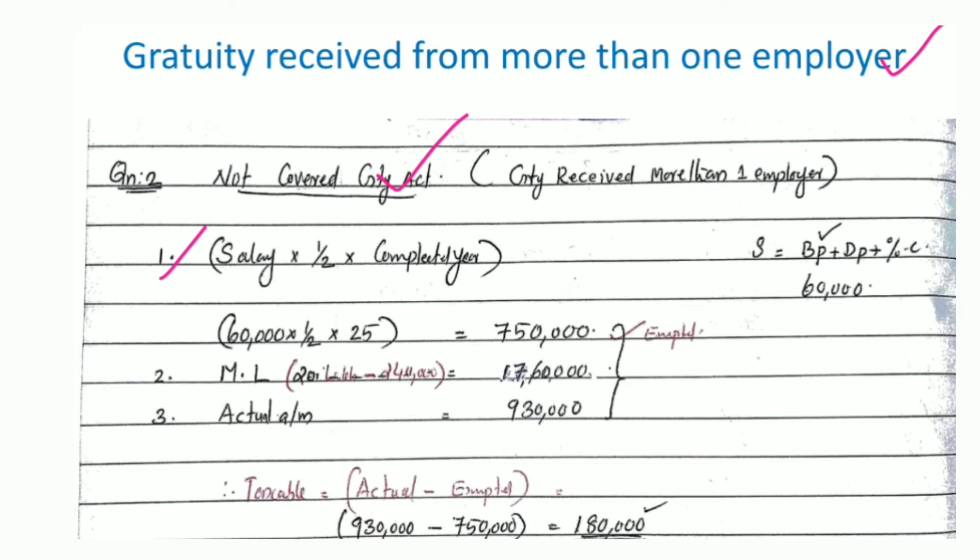The gratuity is not covered by the Payment of Gratuity Act. We use completed years — that is, a half-month salary for every completed year.